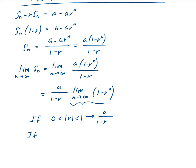For any other R — if it's strictly bigger than 1, or if R is less than or equal to negative 1 — for example, if R is 2, then you get 2 to the power of infinity, which is infinity. So whenever R is greater than or equal to 1 or less than or equal to negative 1, when you take the limit as N goes to infinity, this is going to go to infinity. So this is going to diverge.